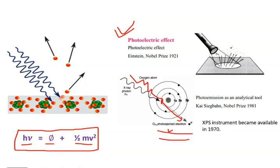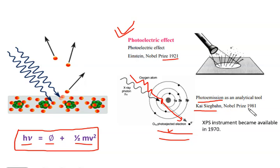The photoelectric effect was studied in detail by Einstein, for which he was given the Nobel Prize in 1921. Photoemission was used as an analytical tool by Kai Siegbahn, for which he was awarded the Nobel Prize in 1981. Kai Siegbahn made an instrument called the x-ray photoelectron spectrometer, which was used for the characterization of materials.